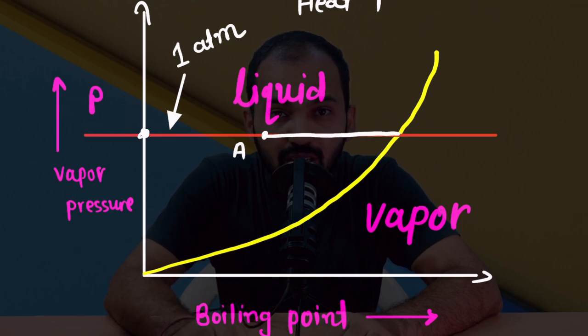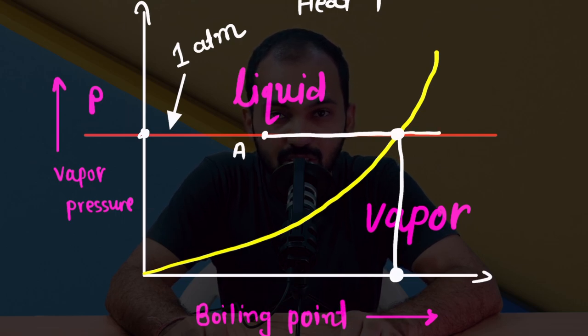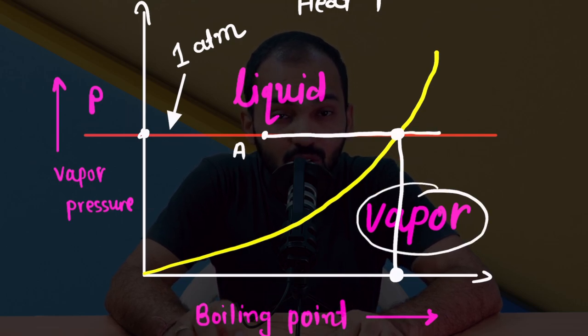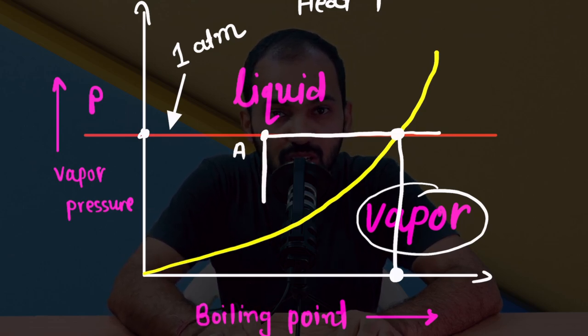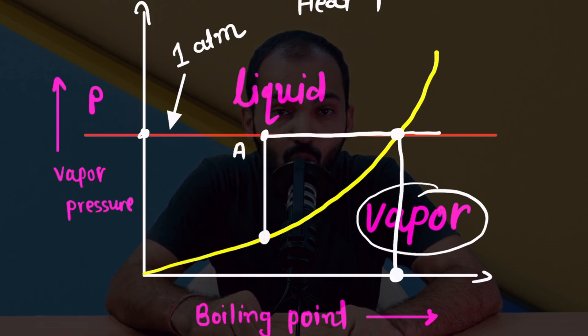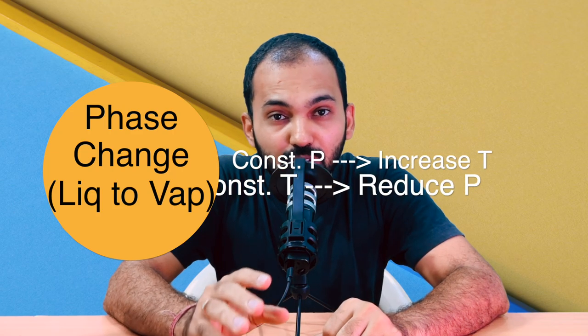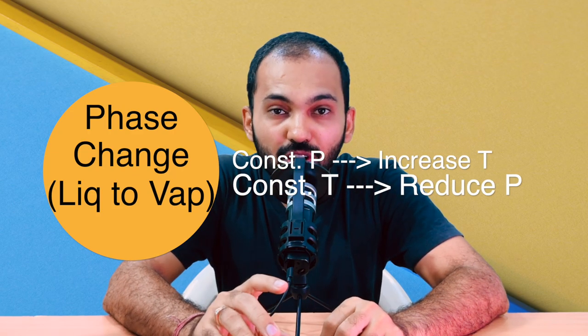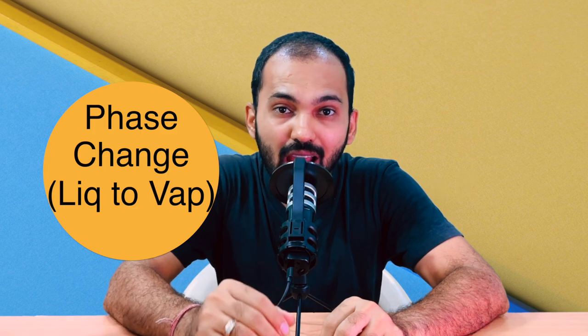If I increase the temperature, up to this point the boiling point will come down. But we have another option as well: at the same point A, if I reduce the pressure at constant temperature, at a certain lower pressure it will reach the boiling point. So the conclusion is that either we increase the temperature at constant pressure, or we reduce the pressure at constant temperature.